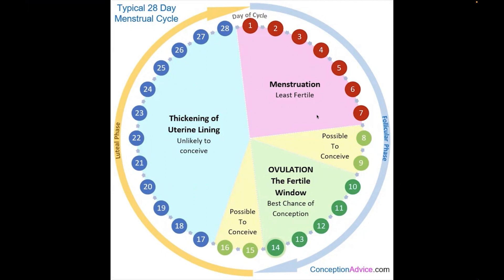This is a picture of a typical 28-day menstrual circle. The picture goes from day one to day 28. Between day one and day seven is your menstrual phase — when you have your period, colored in red. A lot of people have their period for four days, five days, or three days — everybody's different. This calendar is based on 28 days.